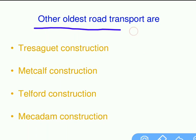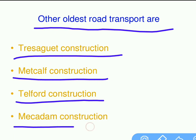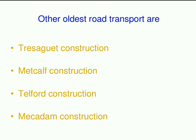Other oldest road construction types include Trusgan construction, Midcalf construction, Telford construction, and Macadam construction. These are all mostly similar with some minor variations.